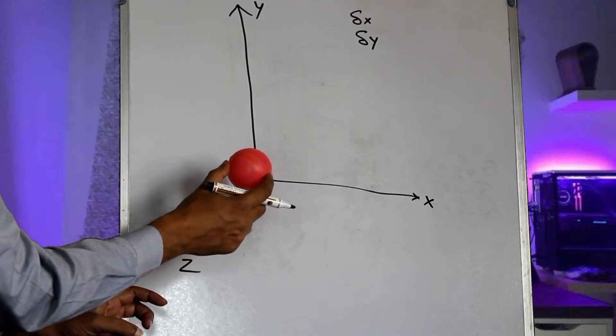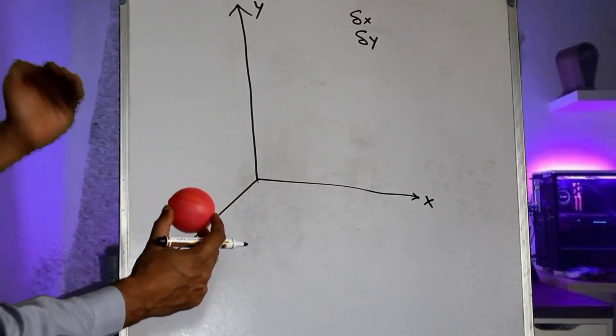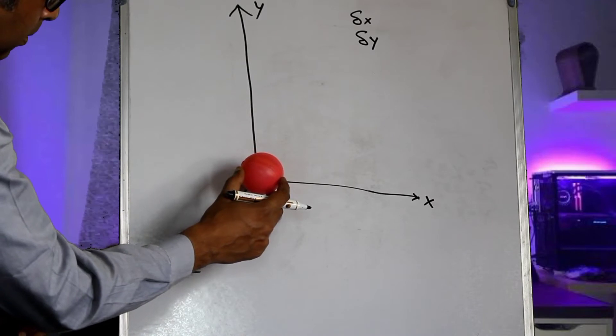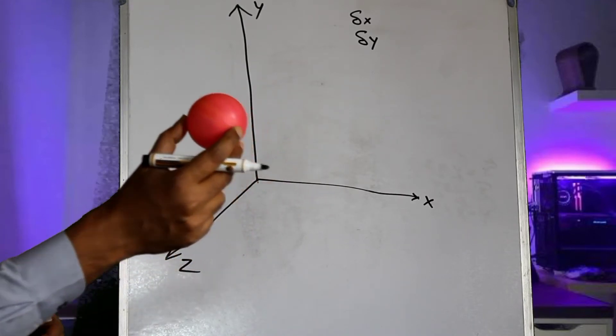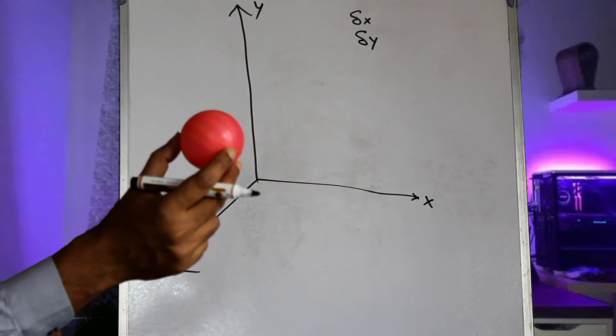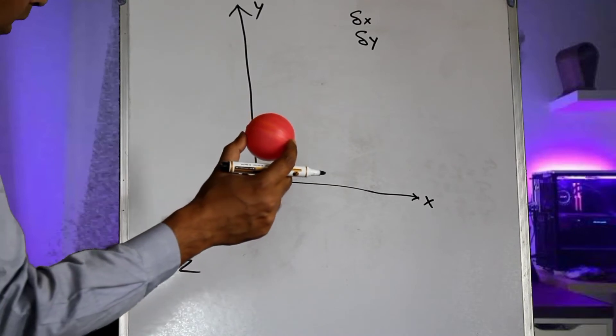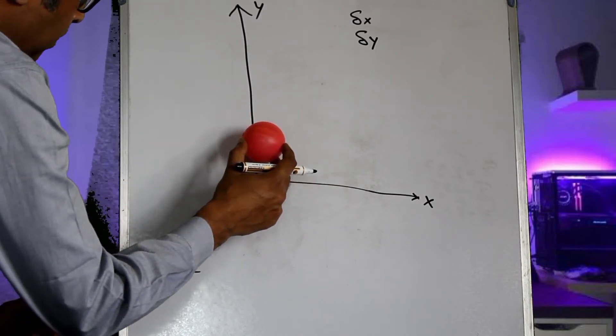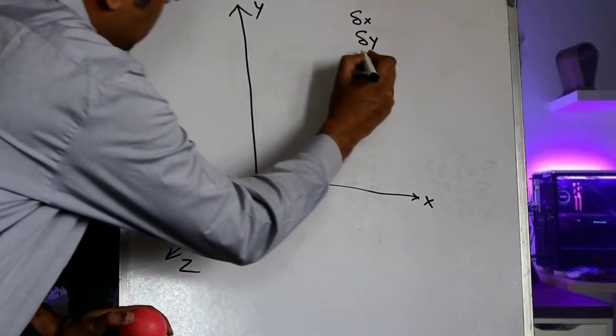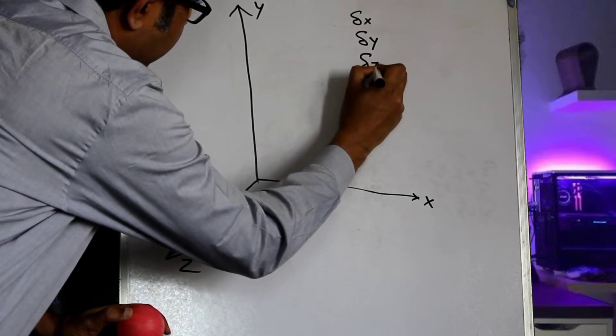Similarly the ball can move in the positive direction of the z axis. So that would mean that the ball will move towards you or in the negative direction of the z axis that would mean that the ball will go away from you. And this translational motion is represented by delta z.